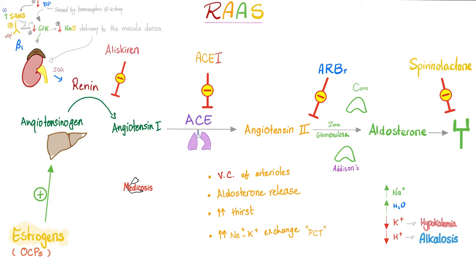Renin, from the juxtaglomerular cells near the glomerulus — part of the juxtaglomerular apparatus — converts angiotensinogen into angiotensin 1. Angiotensin-converting enzyme (ACE), mostly in the lung, then converts angiotensin 1 into angiotensin 2. Angiotensin 2 has two main functions: first, consistent with its name, it constricts vessels and raises blood pressure; second, it stimulates the zona glomerulosa of the adrenal cortex to secrete aldosterone.